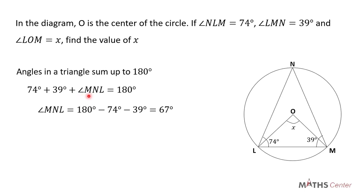Let's simplify this for the value of angle MNL. We are going to have angle MNL is equal to 180 degrees minus 74 degrees minus 39 degrees, and this will give us 67 degrees. This means that the angle formed at point N is 67 degrees.